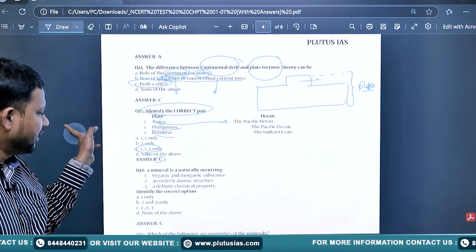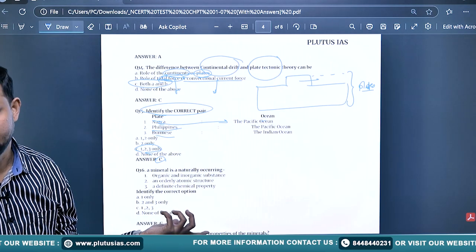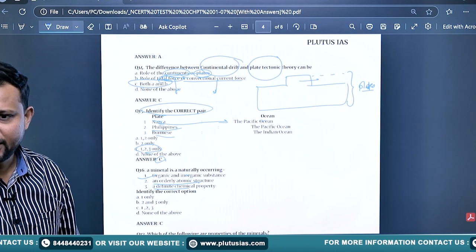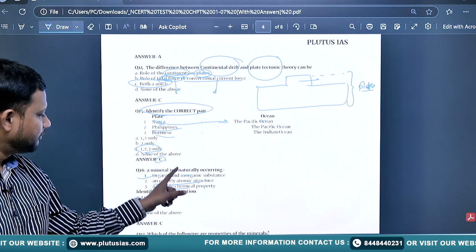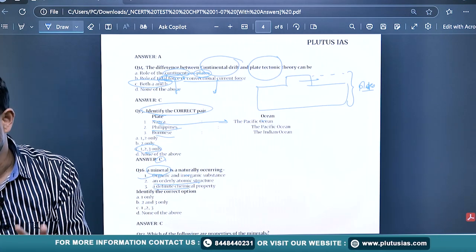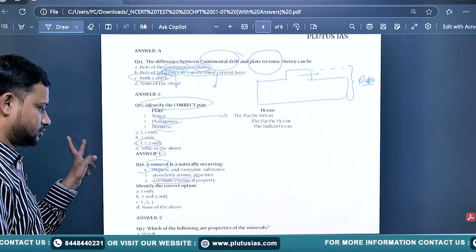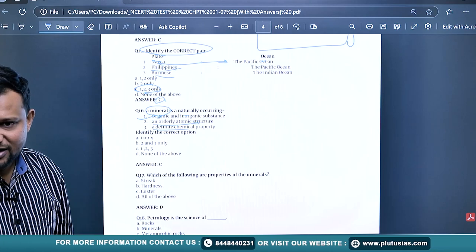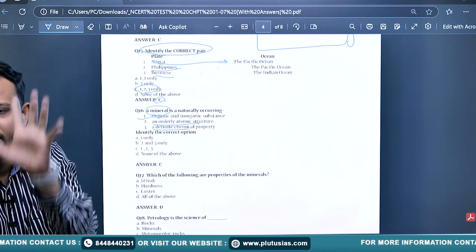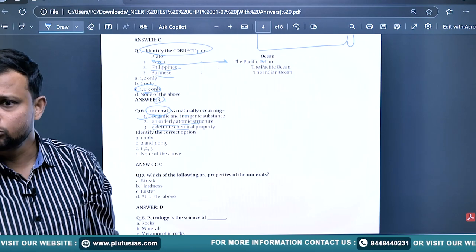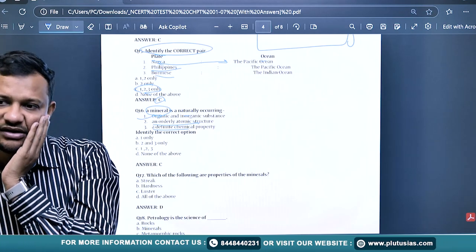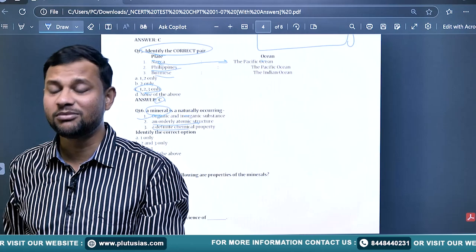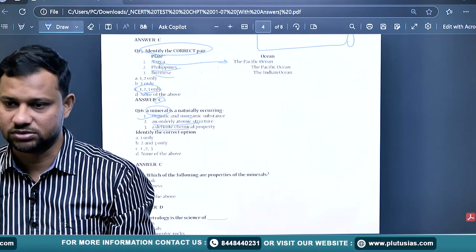A mineral is a naturally occurring substance. It has organic and inorganic composition, an orderly atomic structure, and definite chemical properties. Can it be manmade or natural? Natural only. Mineral is a natural entity or formation. Artificial diamond is not considered as a mineral. A mineral must be a natural formation. Manmade minerals - we do not have this concept. Mineral is only natural.